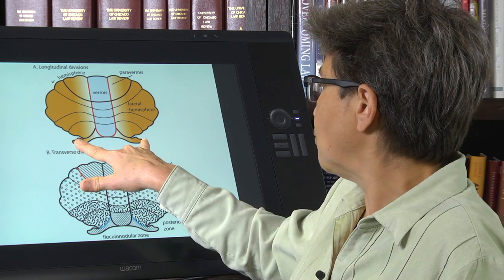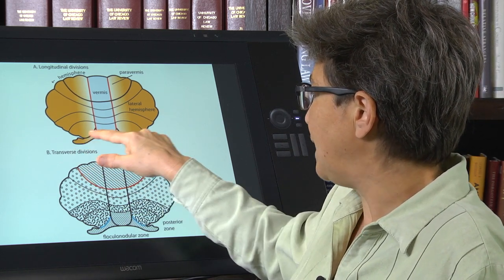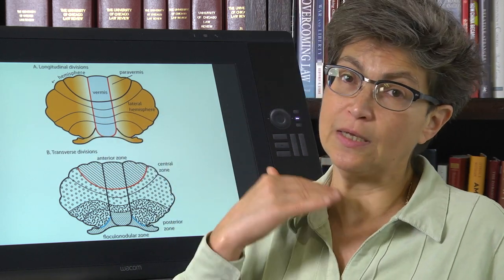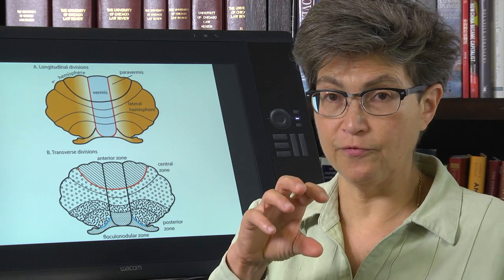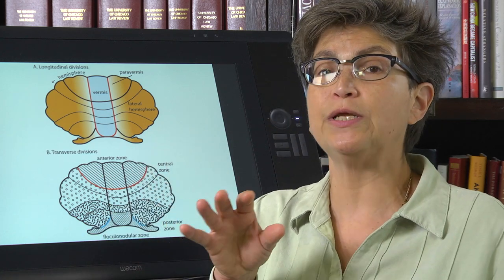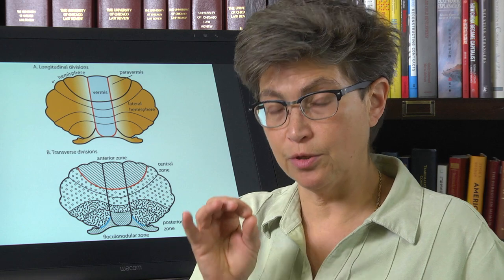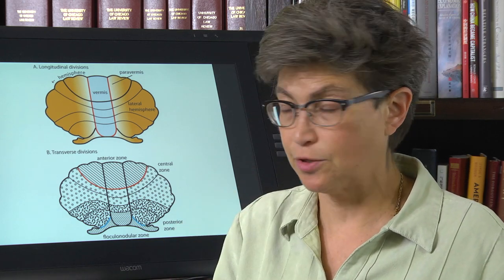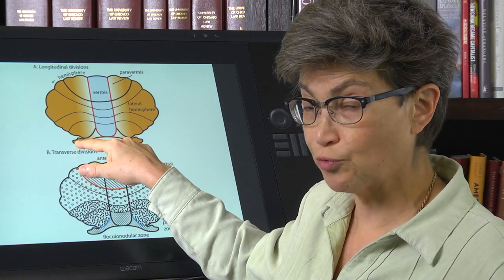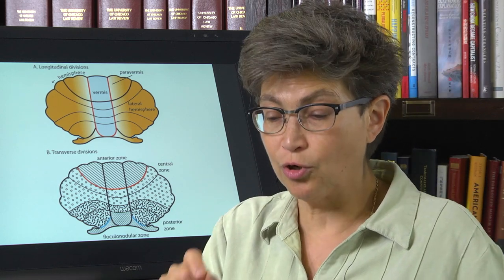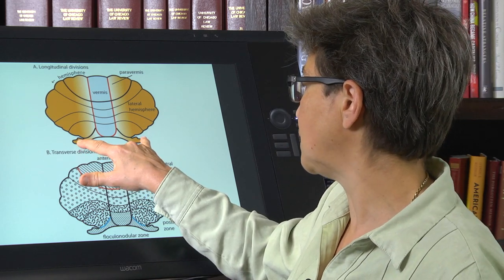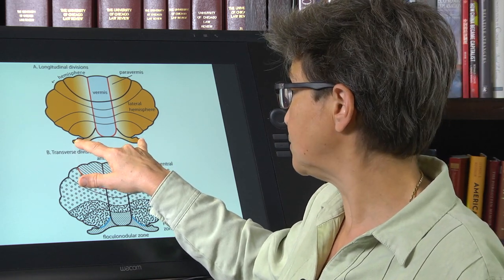A couple of other points here. One is that this bottom little bit is called the flocculonodular lobe. The flocculonodular lobe is the part of the cerebellum most concerned with eye movements, most critical. So it is sometimes called the vestibulo or the archicerebellum, the vestibulocerebellum. And it is lesions in this floccular region that lead you to no longer be able to modulate your vestibuloocular reflex, your VOR. So this is really critical to eye movements in particular out here to the VOR.